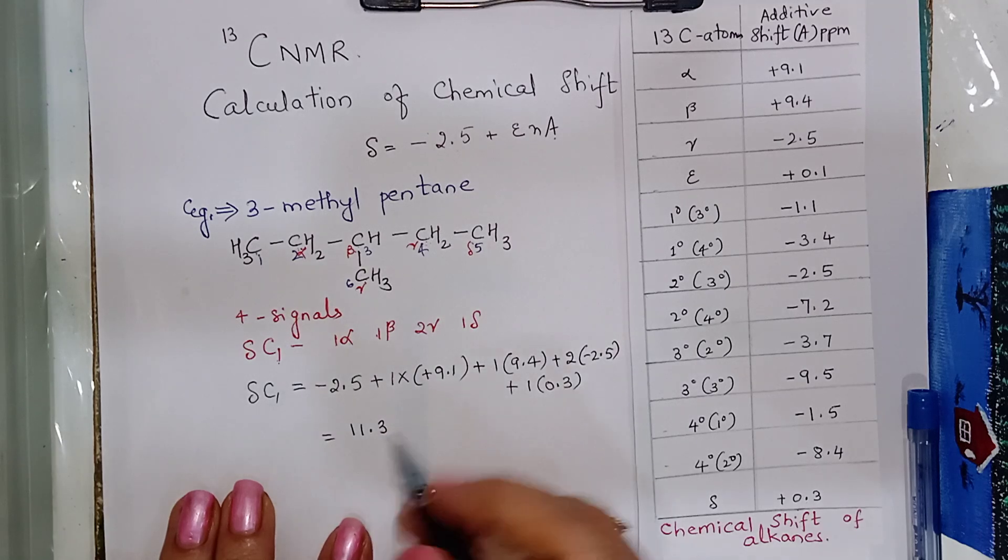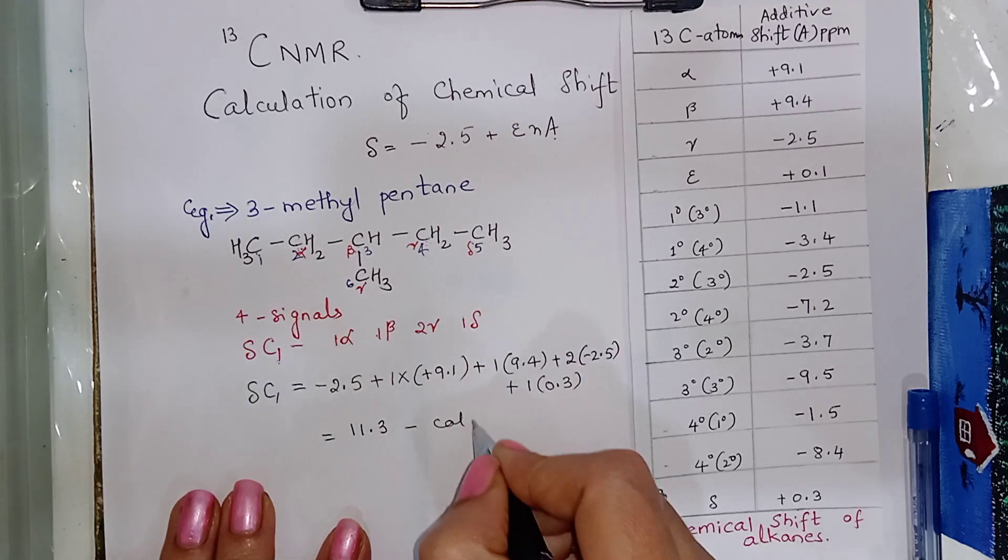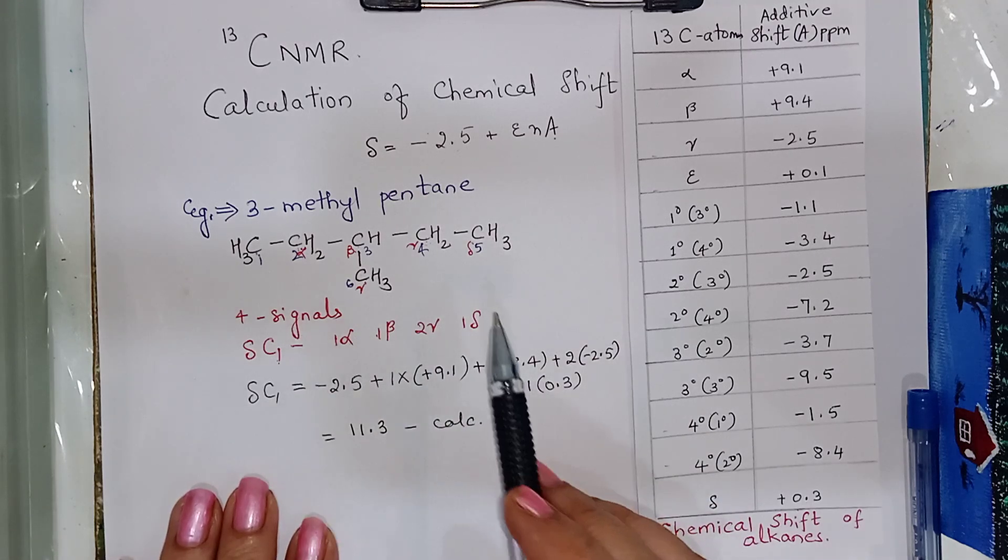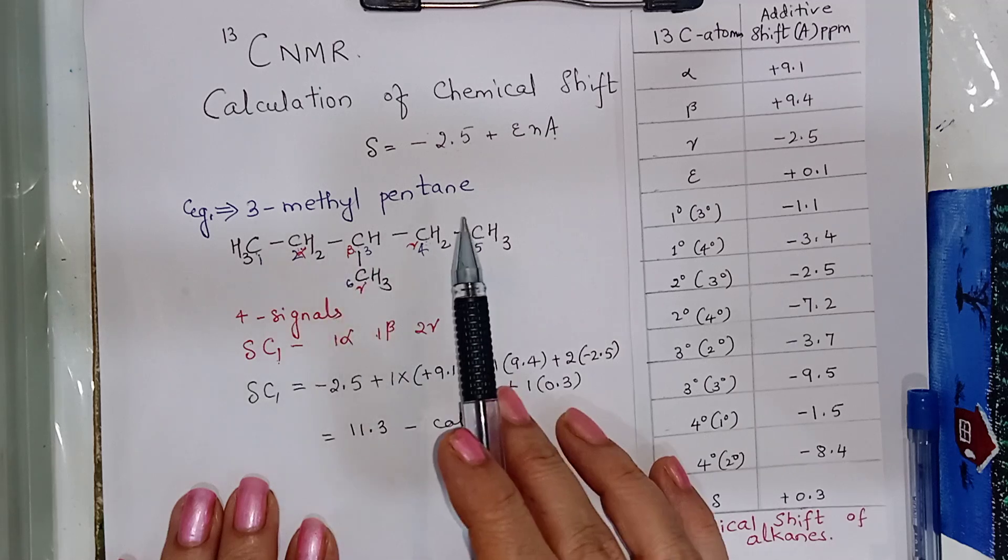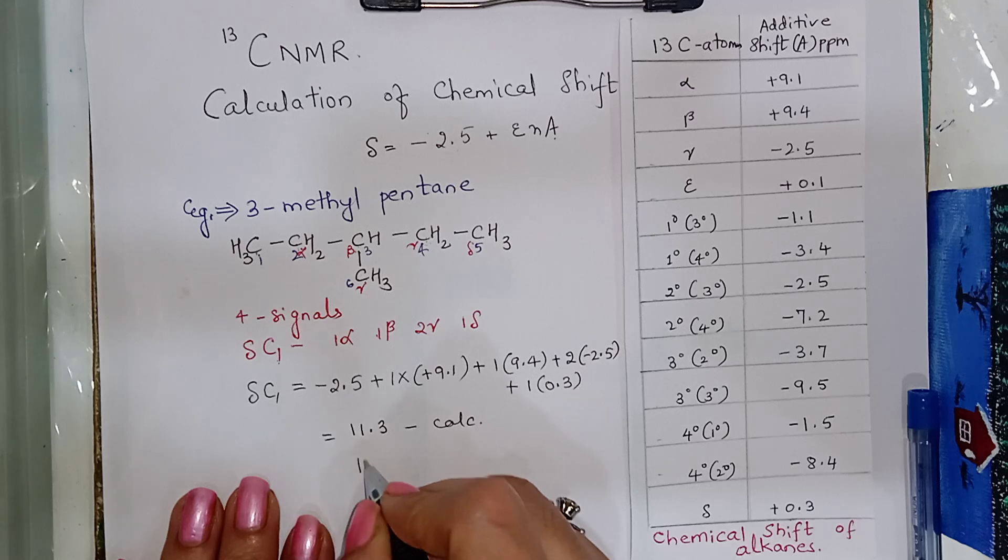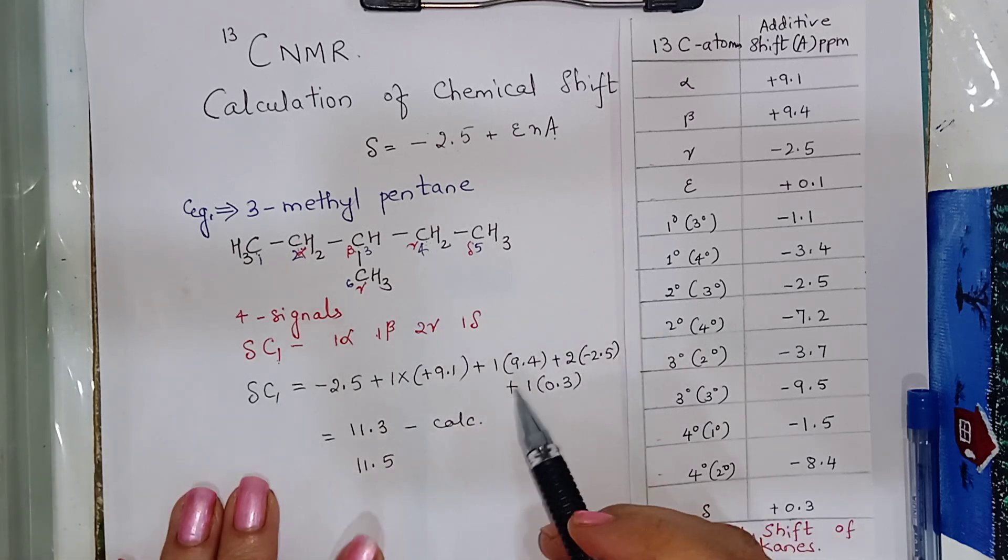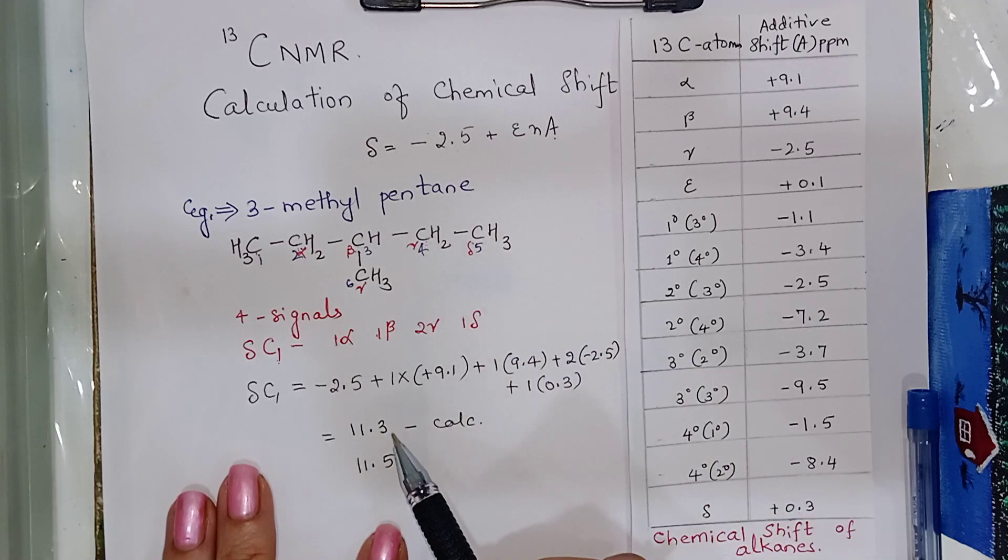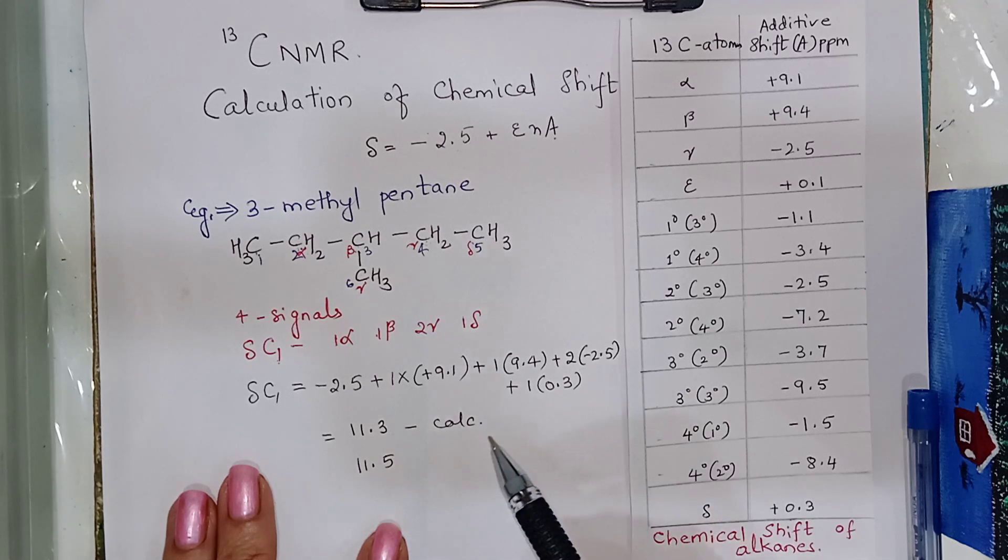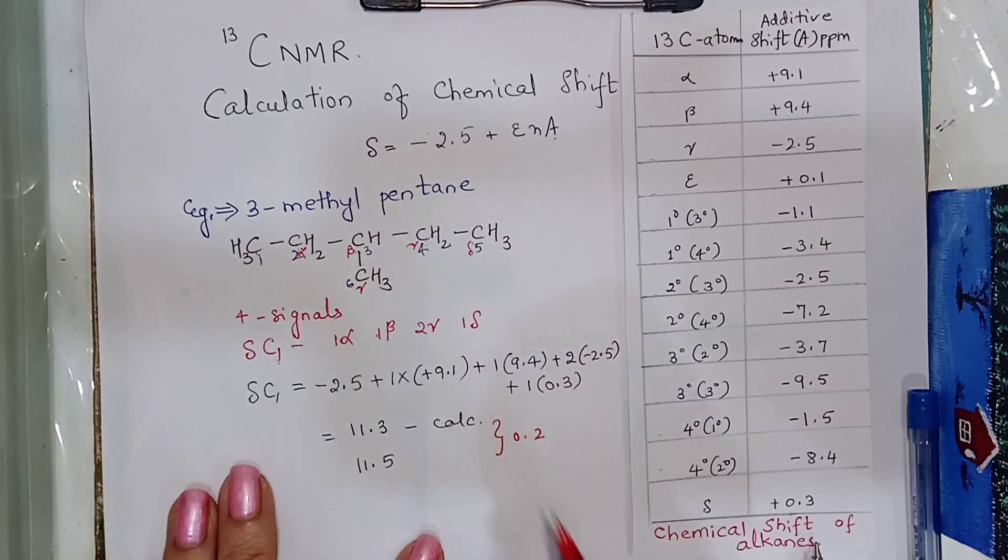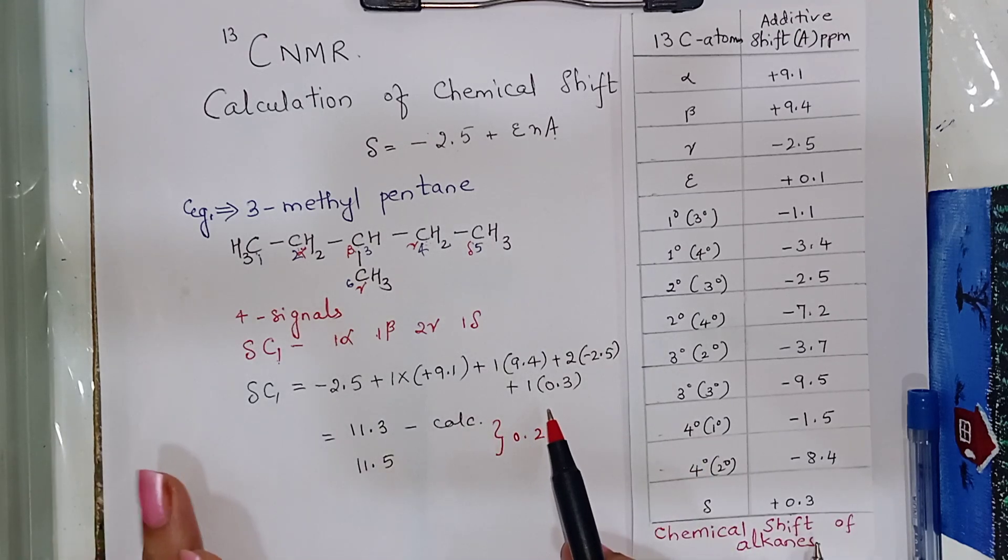This value is calculated value and when experimentally the resonance was recorded, we got the observed value at 11.5, which is very much near the calculated value that means there is very less difference of about just 0.2. Hence, this calculation is valid.